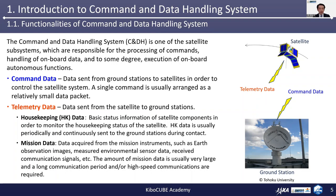Command data is data sent from ground stations to satellites in order to control the satellite system. A single command is usually arranged as a relatively small data packet. Telemetry data is data sent from the satellite to ground stations. The telemetry data can be classified into two categories. One of them is the housekeeping data, or HK data. The HK data contains basic status information of satellite components to monitor the housekeeping status of the satellite. HK data is usually periodically and continuously sent to the ground stations during contact.